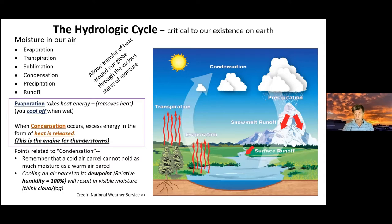If you have a parcel of air at a given temperature, and you cool it down, at some point it gets cold enough that it can't hold its moisture anymore and you get visible moisture — that's your dew point. When we listen to the ATIS, we get temperature and dew point. If the spread is three degrees C or less, we're getting close to the dew point and we'll see clouds or fog.